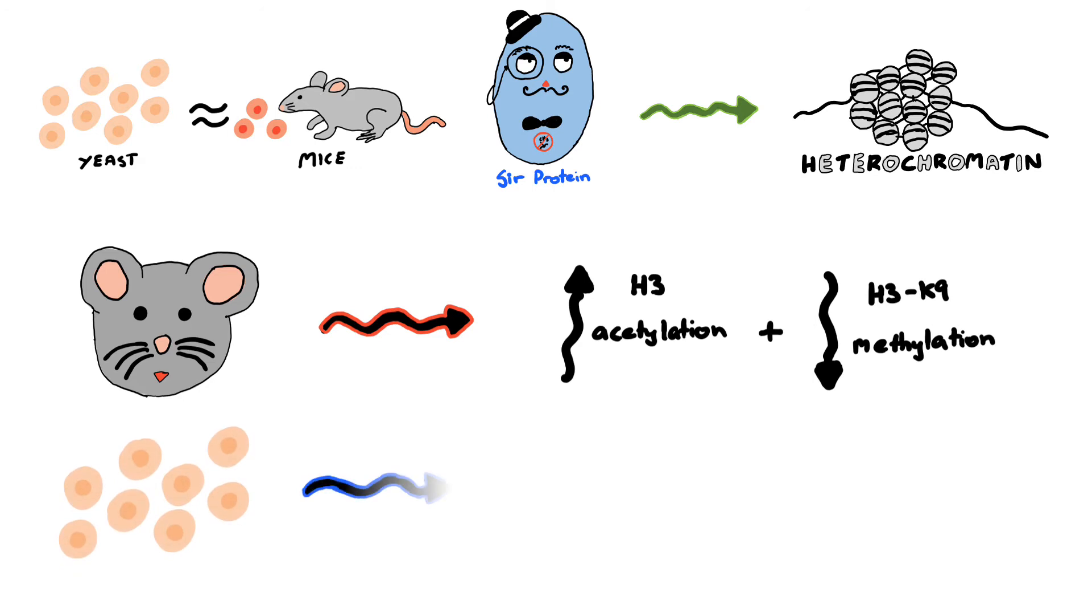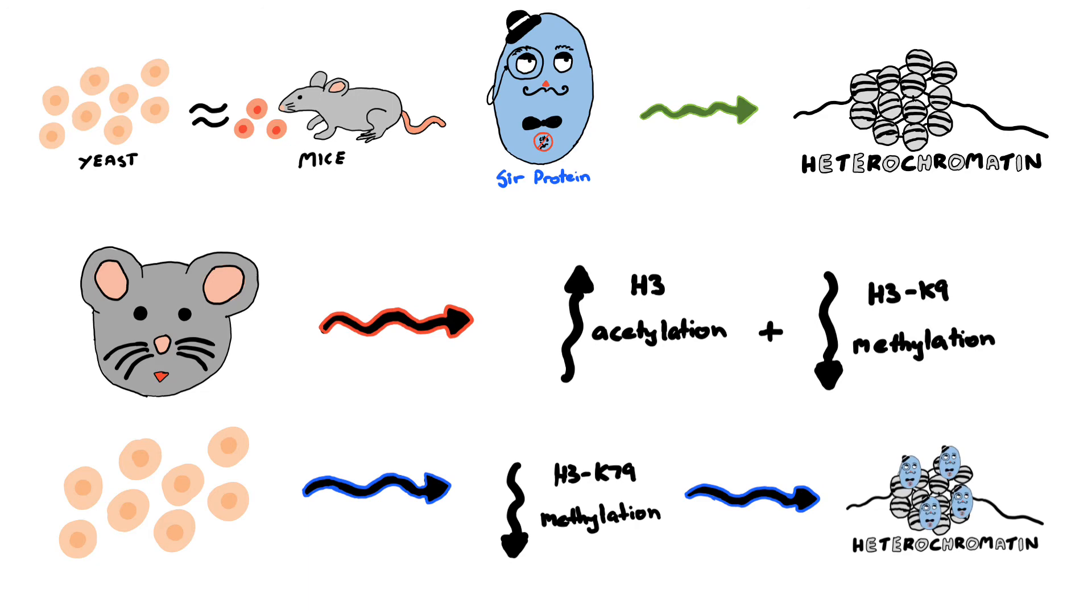In the yeast cells, low H3K79 methylation was observed in heterochromatic regions silenced by CERB proteins, providing evidence that H3K79 methylation is only associated with euchromatic regions, not heterochromatin.